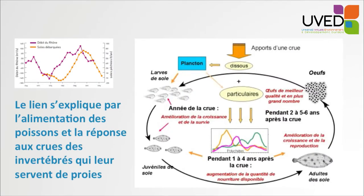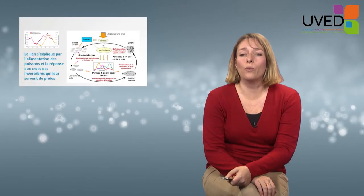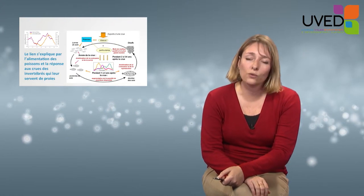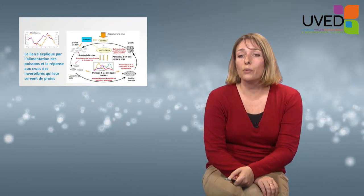This connection can be accounted for by the fact that particulate organic matter brought by the river is consumed by the community of fishes living on the bottom of the sea. The mismatch between flooding years and the quantity of fish being landed can be explained by differences in the way the fishes feed. Polychaete worms are the preferential prey during both the larval phase and the adult phase, and the quantity of these worms depends on the flood.